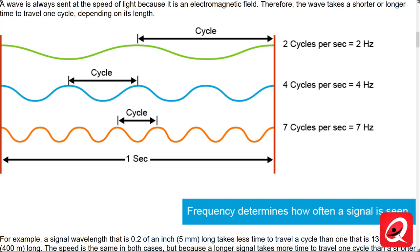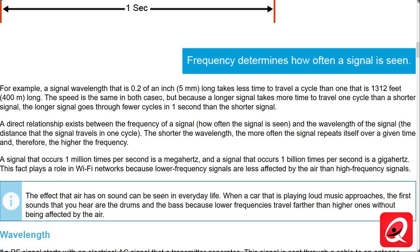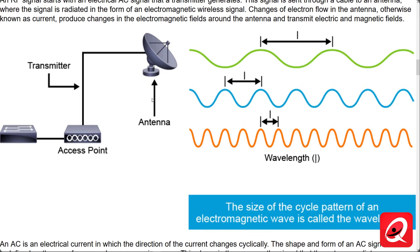Everybody's done the elementary school science experiment where from a car playing music, the first sound you always hear are the low tones — the bass. As you get closer, you start to hear the higher tones. The next principle is wavelength — basically the spatial period of a periodic wave. Think of it as the distance where the wave shape repeats: the distance between consecutive corresponding points of the same phase of the wave, like two adjacent crests, two adjacent troughs, or the zero crossing points.